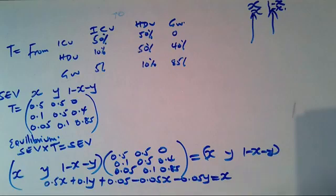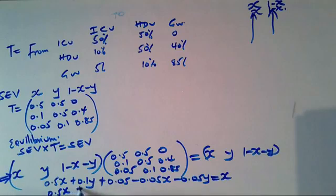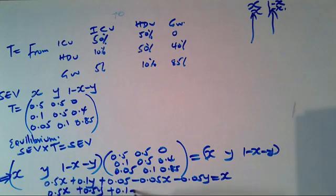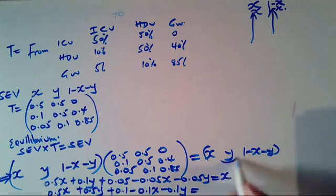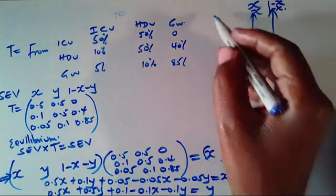The second equation is formed by multiplying the save row by the second column: 0.5X + 0.5Y + 0.1(1−X−Y) = Y. Expanding: 0.5X + 0.5Y + 0.1 − 0.1X − 0.1Y = Y.